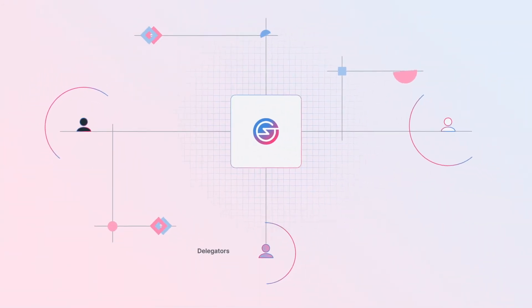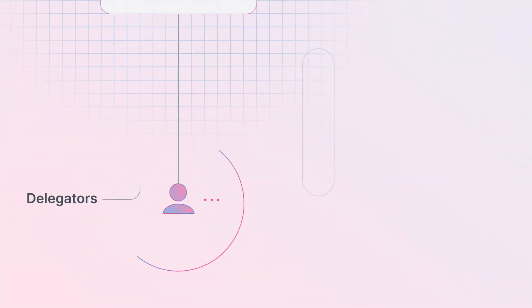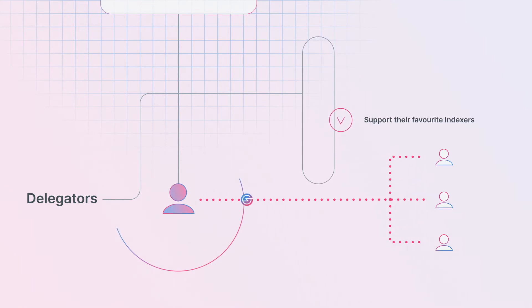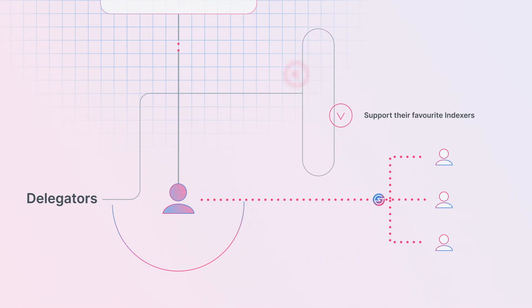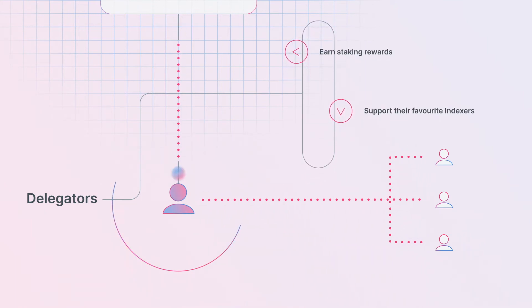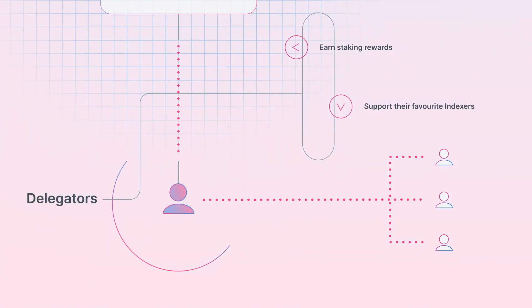Delegators, the third participant in our model after consumers and indexers, participate in the network by supporting their favorite indexers. They delegate their tokens to indexers in order to earn staking rewards. Here the token serves as a reward mechanism.